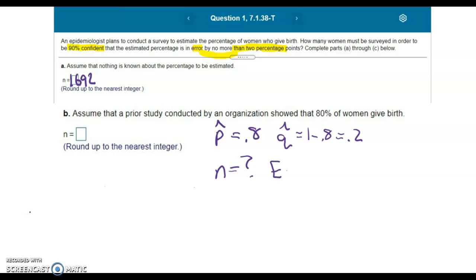We know that E equals 0.02. And in this case, we're going to have the same critical value for a 90% confidence level. So that would be 1.645.